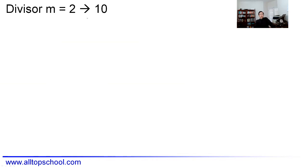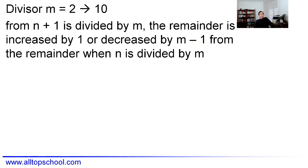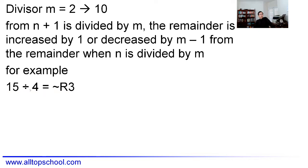We're considering divisors 2 to 10. When n+1 is divided by m, the remainder either increases by 1 or decreases by m−1 compared to n divided by m. For example, 15 divided by 4 has remainder 3.